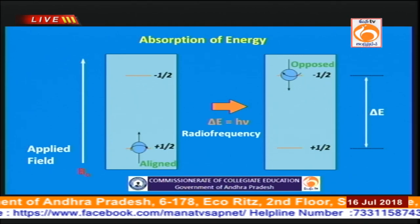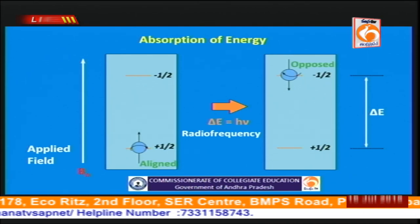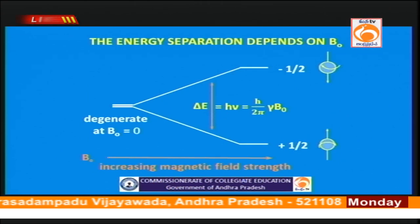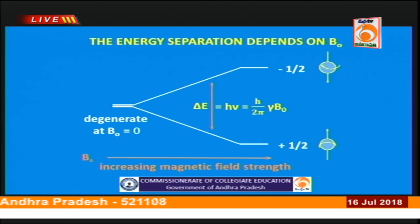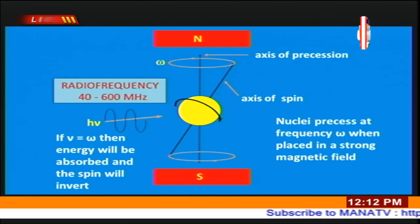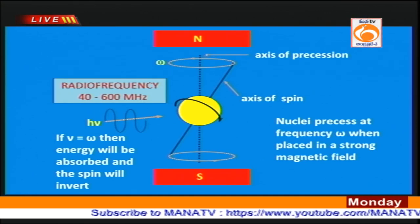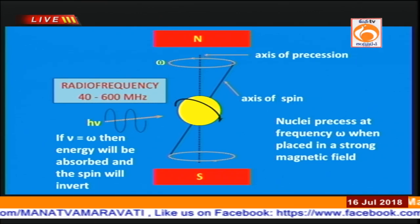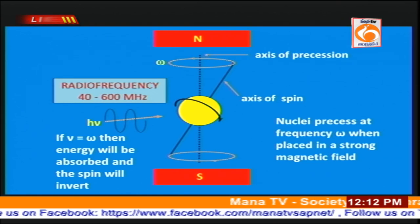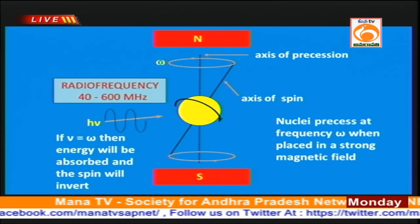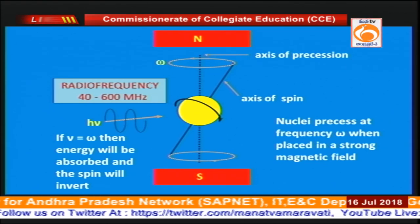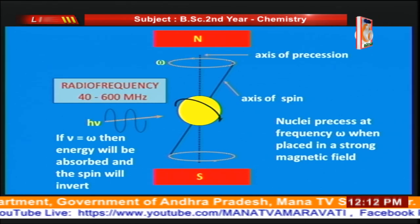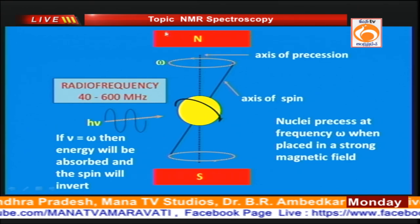For every one lakh protons, only one proton will be in excess in the alpha state. The energy difference between the two states ΔE is given by h/2π × γ × B₀, where γ is a very important parameter. This diagram explains what happens when the applied magnetic field B₀ is used. When the sample is placed in the B₀ field, the proton, being like a tiny magnet, will undergo precessional motion to withstand that field.